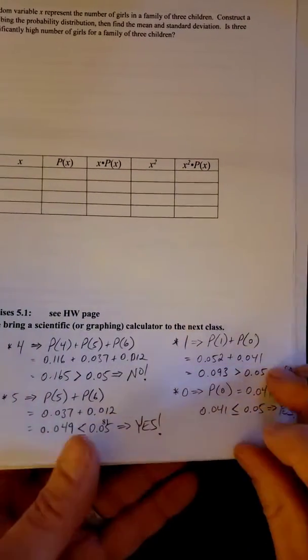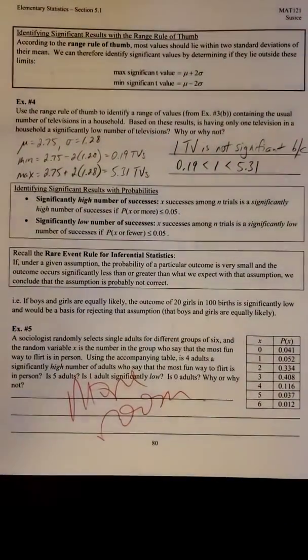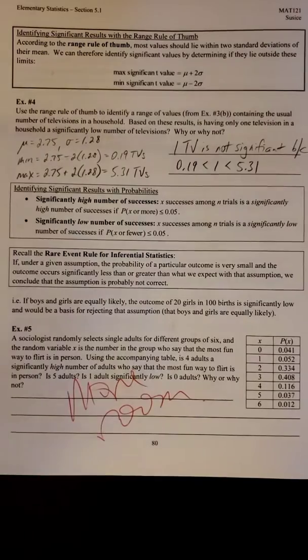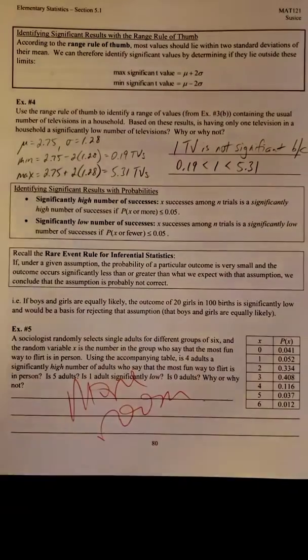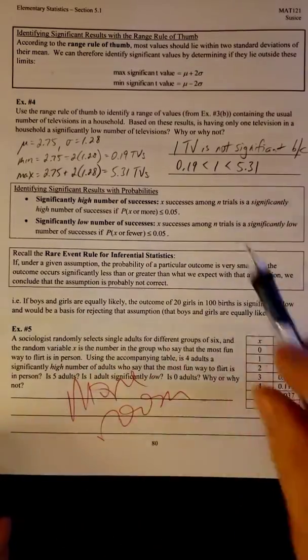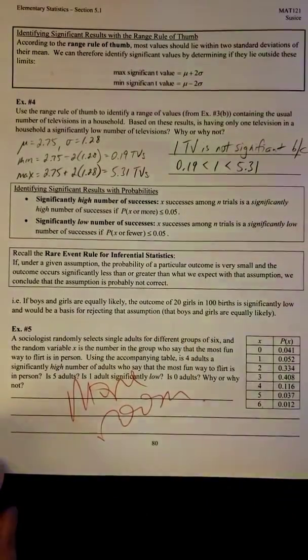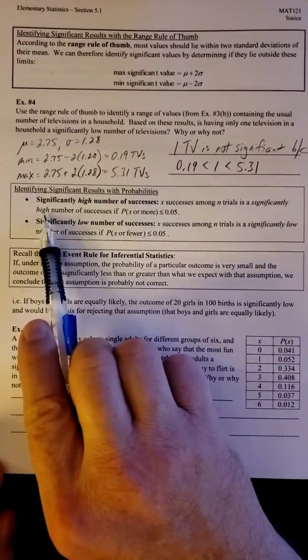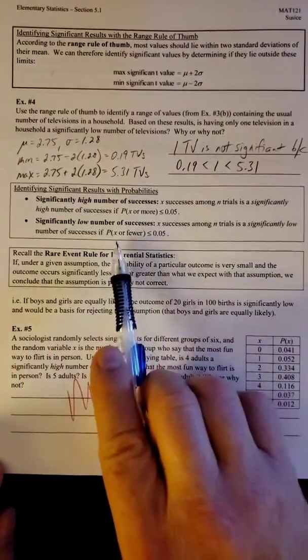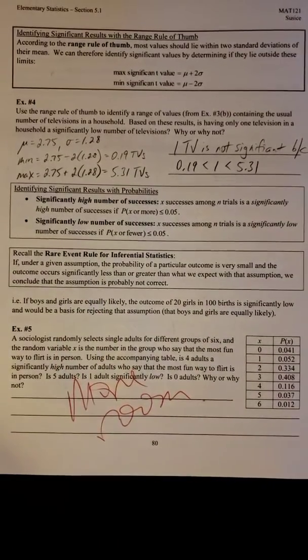So hopefully that kind of clarifies that problem. Significant values can be tricky. You have the two different cases. You've got the range rule of thumb, which is one of three buckets. If it's in one of those three buckets, it's either significantly low, it's not significant, or it's significantly high. But probability and significance is a little bit trickier because you have to look at that number and above when you're looking for significantly high, but you're looking at that number and below when it's significantly low. So we've got one more problem to do that I hope will tie it all together.